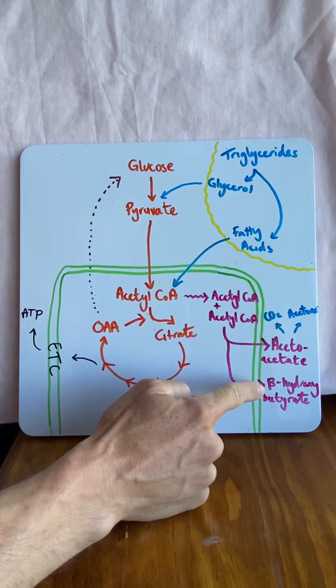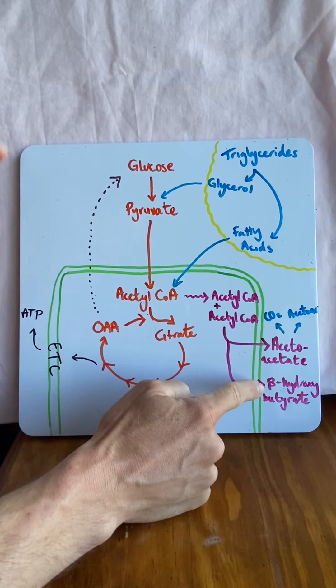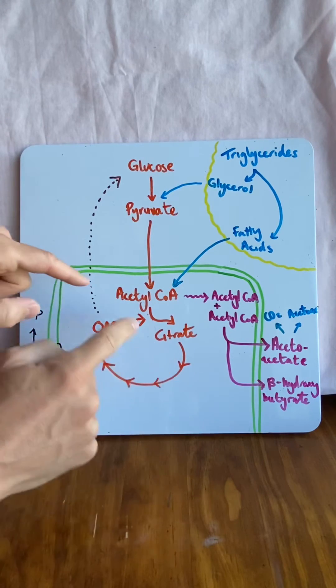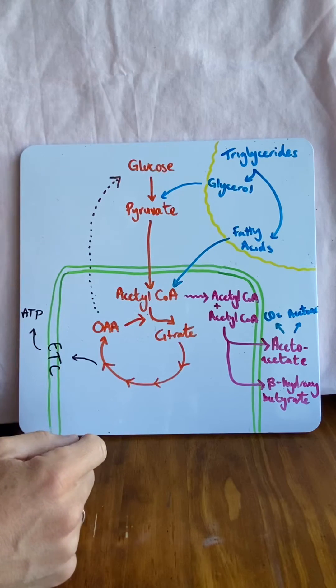Beta-hydroxybutyrate, for the brain—remember we're doing this for the brain—jumps across the blood-brain barrier, turns back into acetyl-CoA, and can be utilized as an energy source.